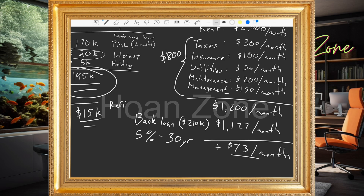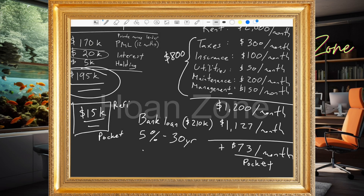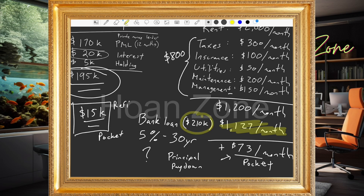This property costs you nothing because you put that $15,000 in your pocket and you continue to make more money — $73 a month in the other pocket. In addition to the $73 per month, you also have principal paydown. When you make your payment, some of it goes toward principal — your $210,000 loan goes down every single month, building wealth. Your net worth is going up.